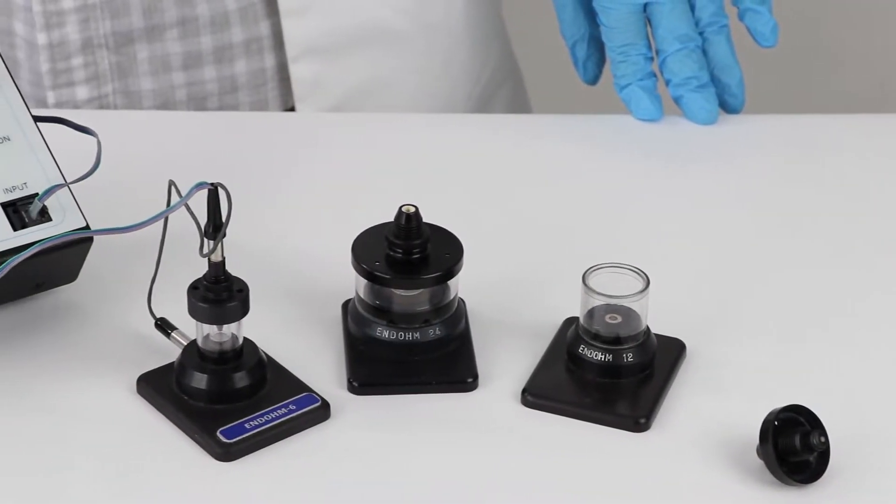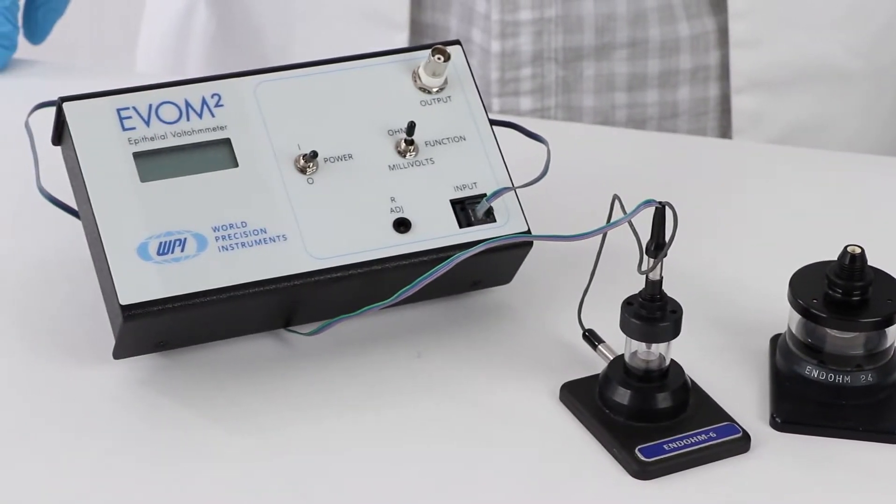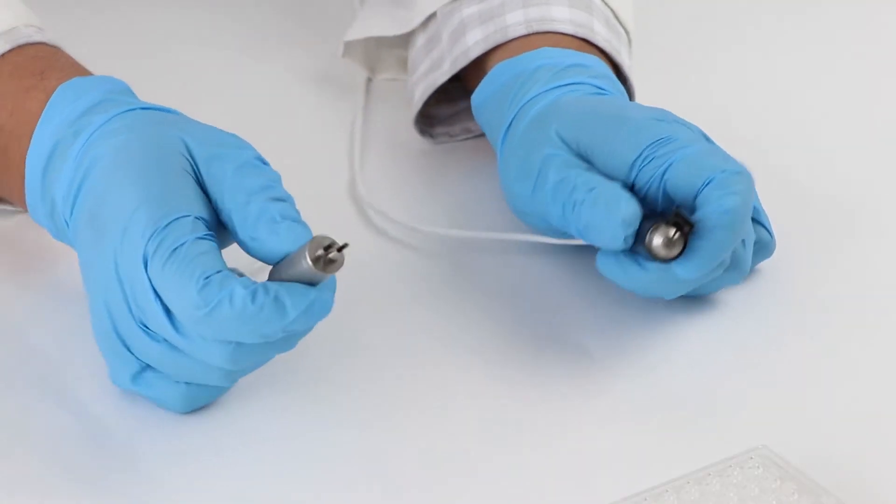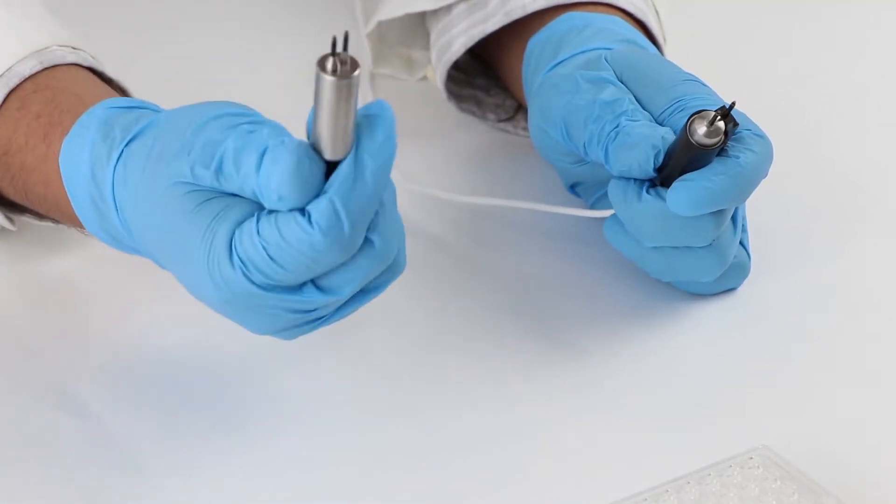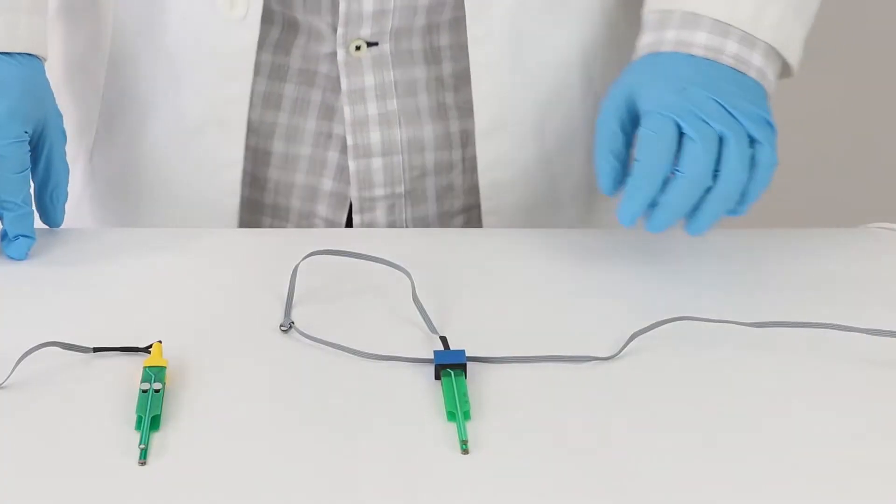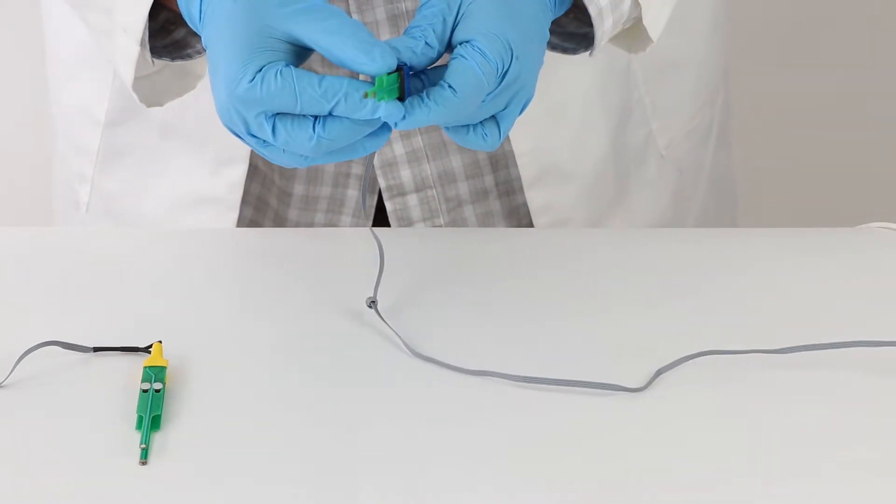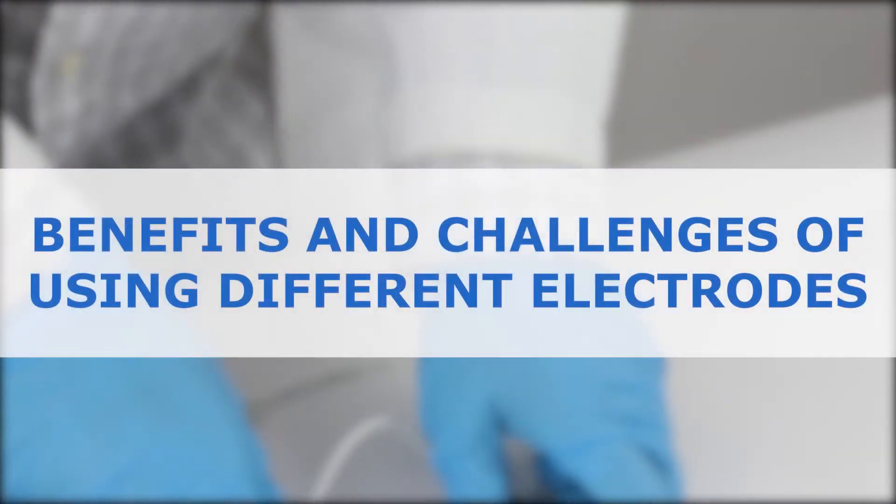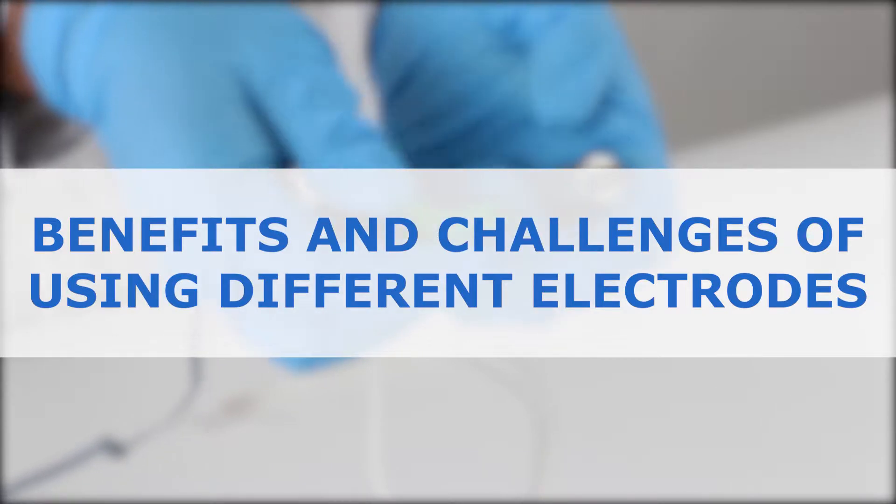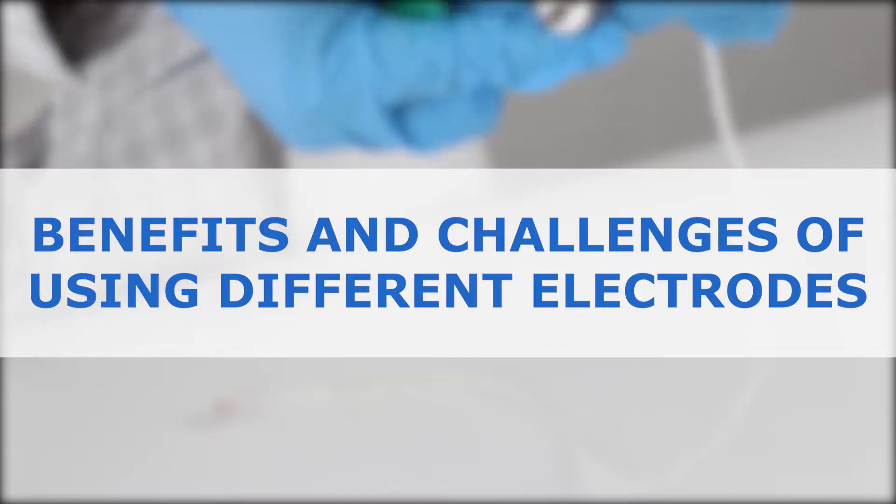Today we will talk about the selection of electrodes that we offer to measure electrical resistance in order to calculate transepithelial electrical resistance, referred to as TEER, of cellular monolayers or tissues grown on permeable support, for example, cell culture inserts. I'm going to talk about the benefits and challenges of using electrodes in the context of measuring electrical resistance of cells and tissues.